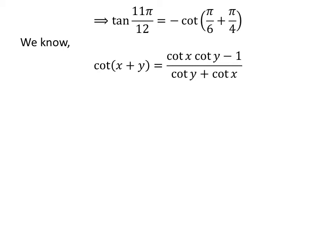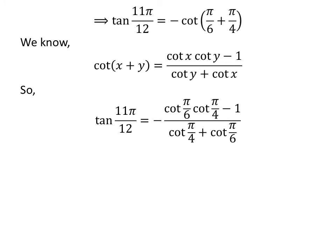We know the trigonometry identity cotangent of x plus y is equal to cotangent of x times cotangent of y minus 1 upon cotangent of y plus cotangent of x. The proof of this identity is given in the video appearing in the upper right corner, and the link is also given in the description section. Application of the above identity gives us tangent of 11 times pi upon 12 is equal to minus of cotangent of pi upon 6 times cotangent of pi upon 4 minus 1 upon cotangent of pi upon 4 plus cotangent of pi upon 6.